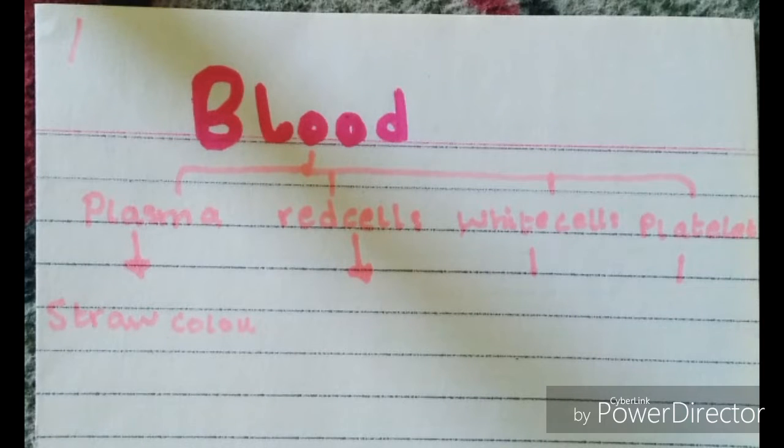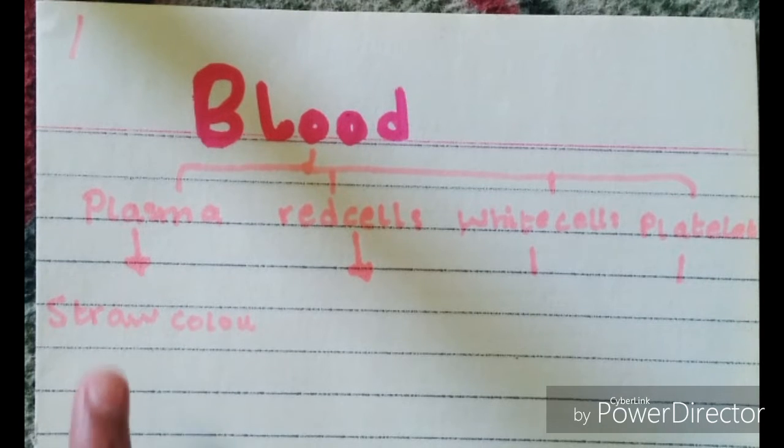Today our topic is blood. Basically, blood is made from plasma, red cells, white cells, and platelets. Plasma is straw colored liquid. It's mainly water and includes digested food from the intestines.